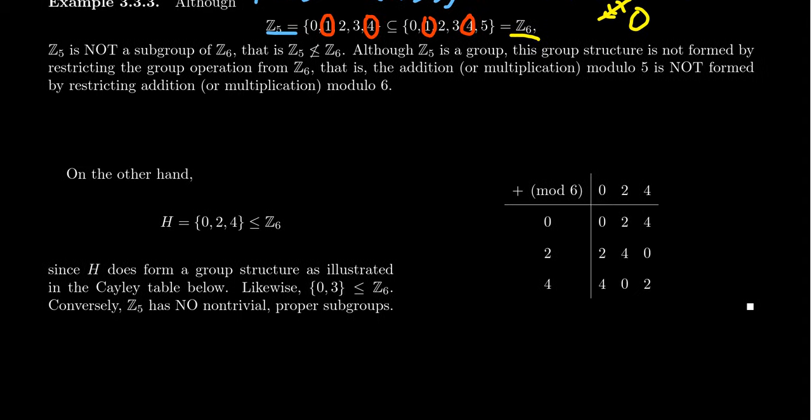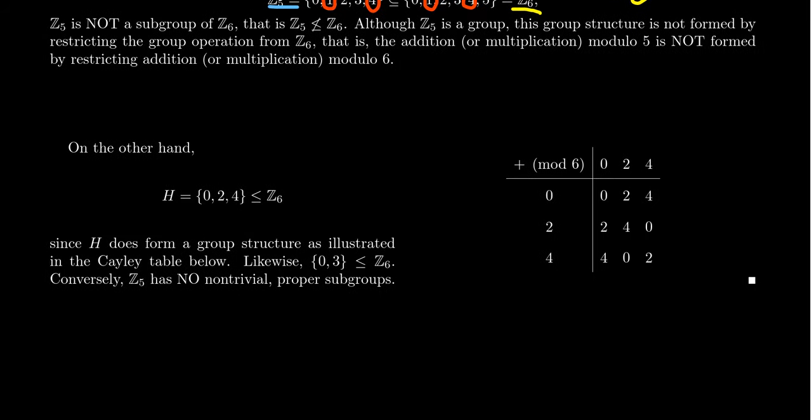Now, in comparison though, we could consider the following set. Take the set of just 0, 2, and 4 inside of Z6. Now, if we use just these three elements working addition mod 6, we can see that we do, in fact, have a subgroup structure.